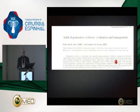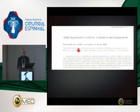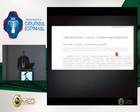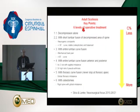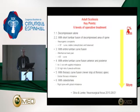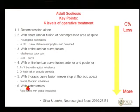I like this paper from nine years ago, but still very current. With Fernando Silva and Leah Lenke, on adult degenerative scoliosis evaluation and management, they have stated six levels of operative treatment. The complication rate ranges from a minimum when you perform only decompression, and step by step you go to the worst type of complication when you do an osteotomy.